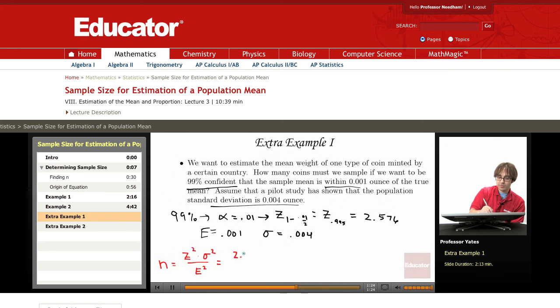So we take 2.576, square that. We want .004, square that.